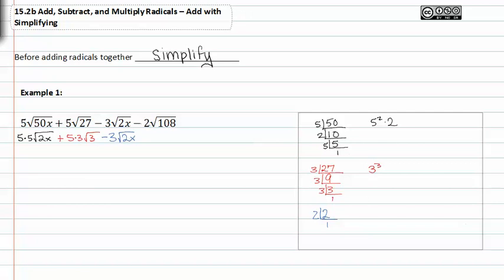Finally we have negative two root one hundred eight. One hundred eight can obviously be factored further. Divide by two to get fifty four, fifty four is also divisible by two to get twenty seven, twenty seven is divisible by three to get nine, divide by three to get three, divide by three to get one. So the prime factors of one hundred eight are two squared times three cubed. When I simplify that radical I get two times two times three root three.